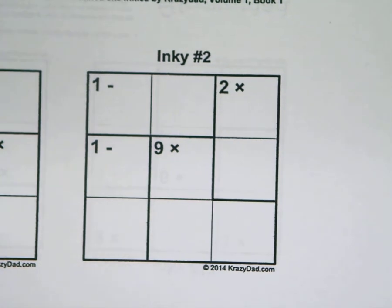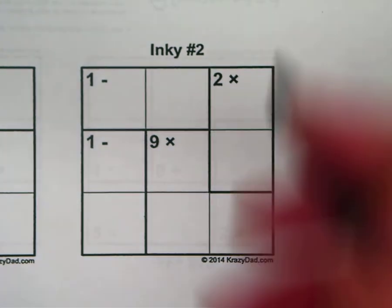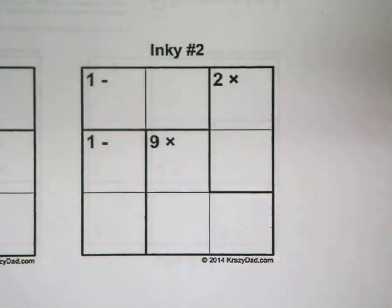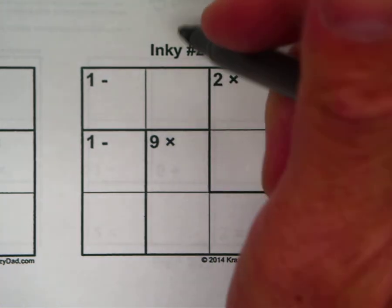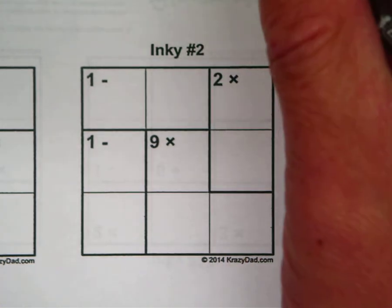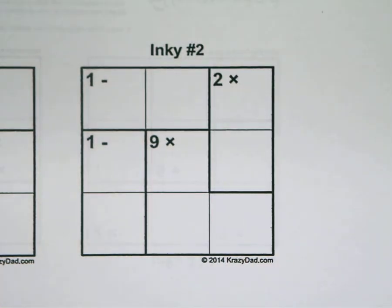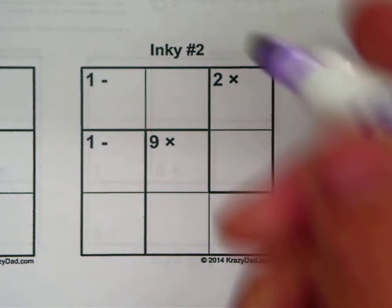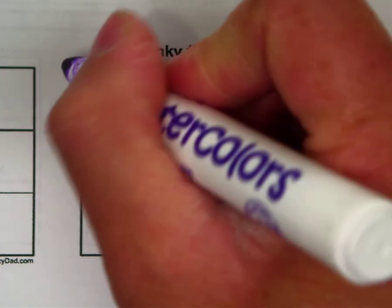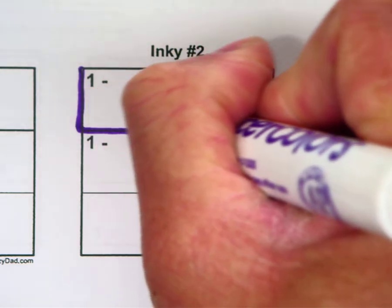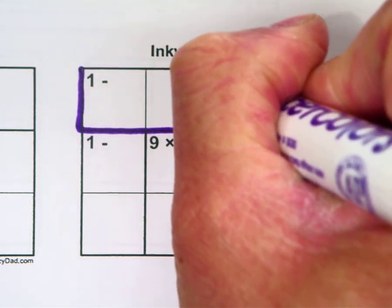Alright, if you've never done one of these, let me show you guys how to do one. These are Inkies — they're the same name as KenKens. In here they have something called cages. The cages are the darkened ones, so if you can't see that, make that very clear.